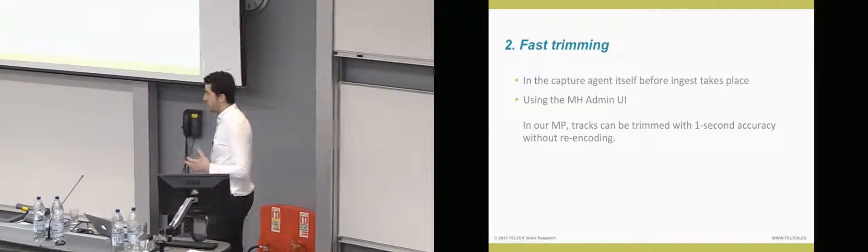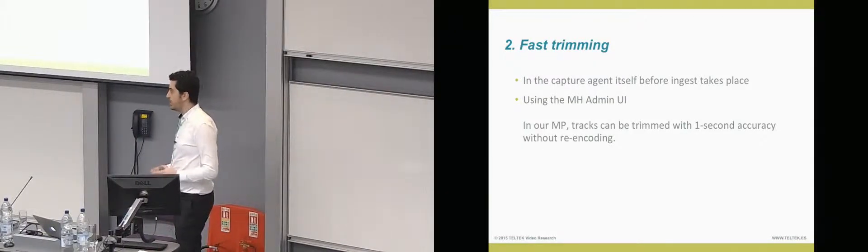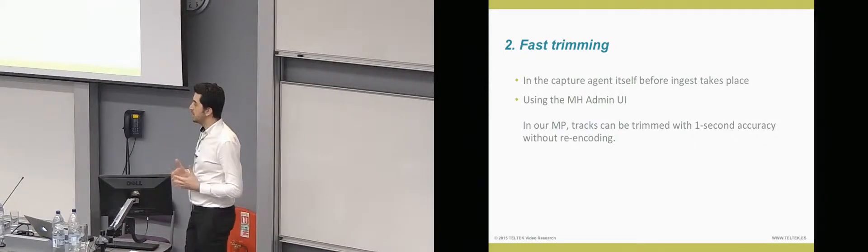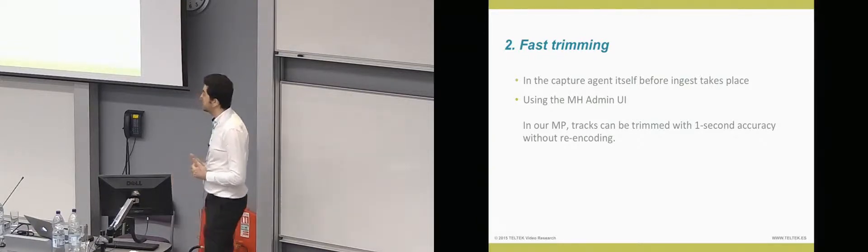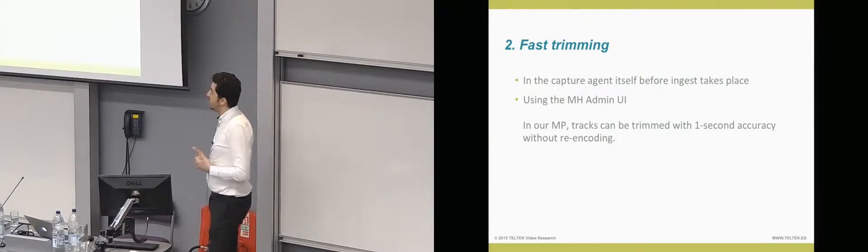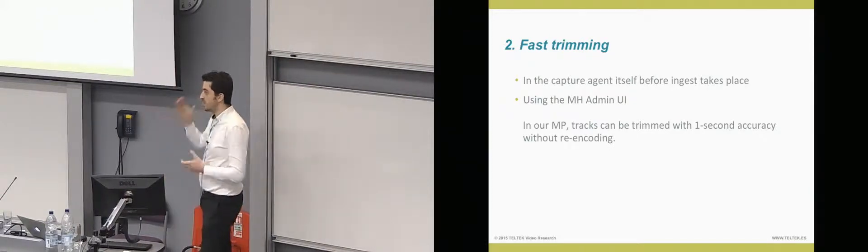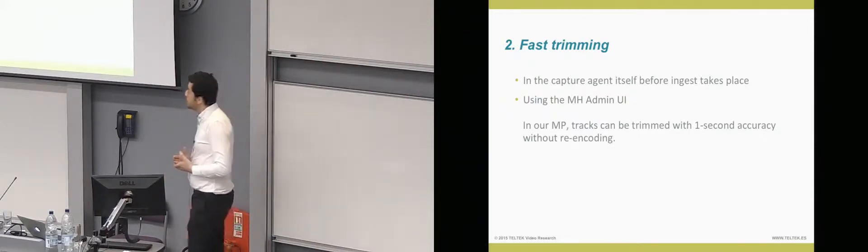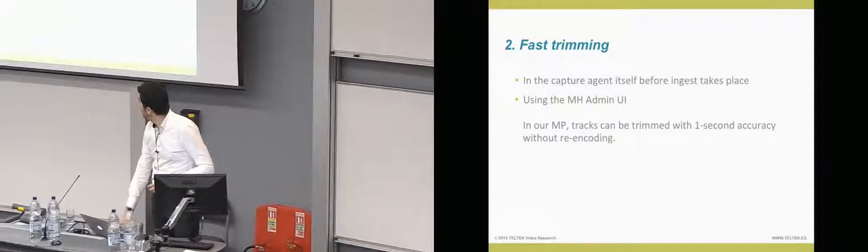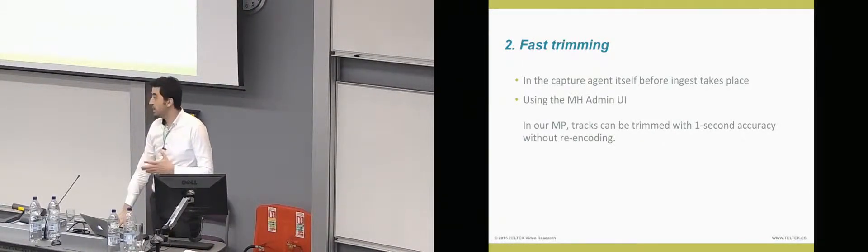Demo. We have a look. What do you do in a regular workflow? You do fast trimming. One of the operations you've got to wait for is to trim the media package. Okay. Right now, you can do it in the capture agent itself before ingest takes place. Or you can do it using the Matterhorn Admin UI. In our media package, in the one we're working on right now, tracks can be trimmed with one-second accuracy without re-encoding. So, this means you go to the editor, video editor, and you select this point and this point. You cut it, and it's done without re-encoding at all. So if you have this operation on the cloud, on your core, it's going to be really fast to do it.